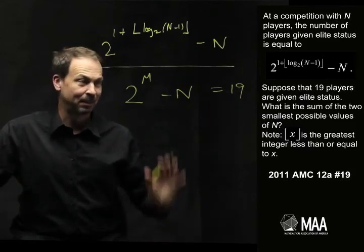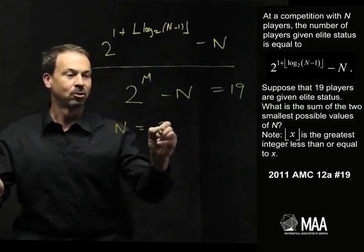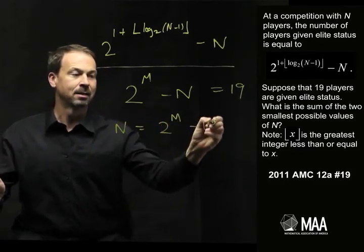In fact, the question's about something about N. So let me rearrange this formula. It says that N must be 2 to the M minus 19.